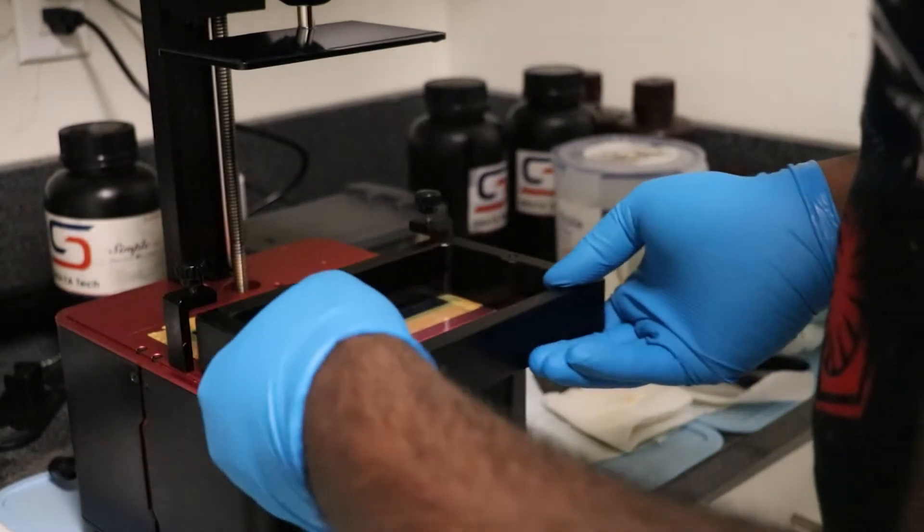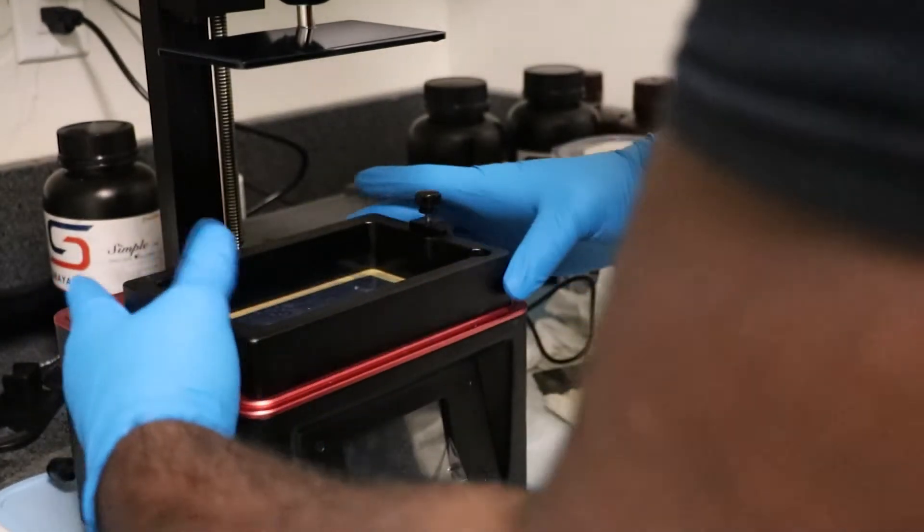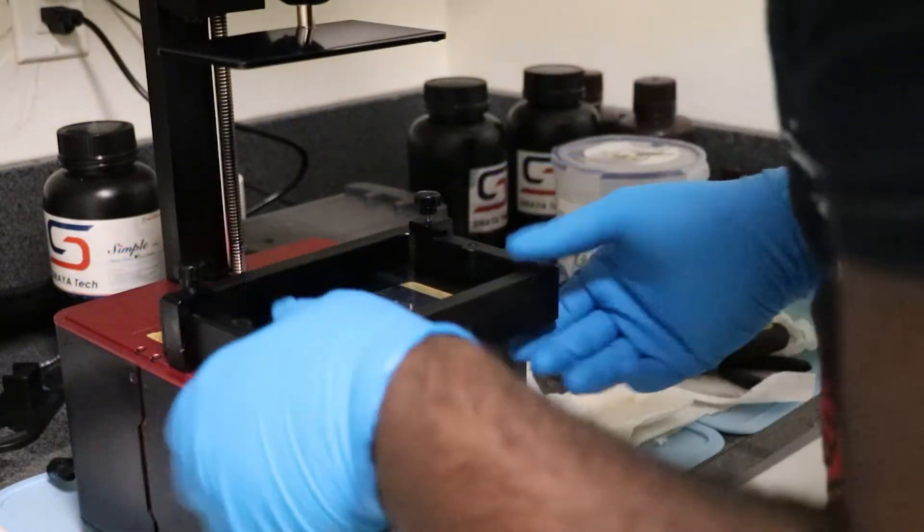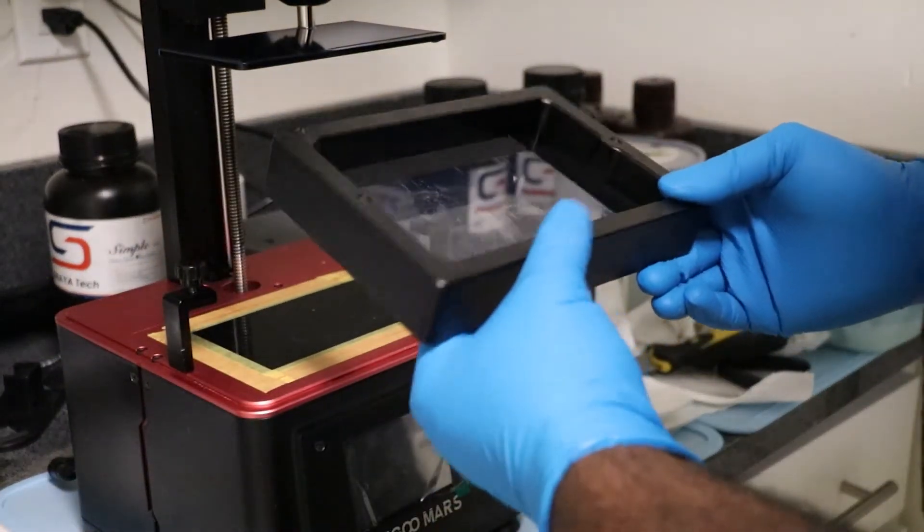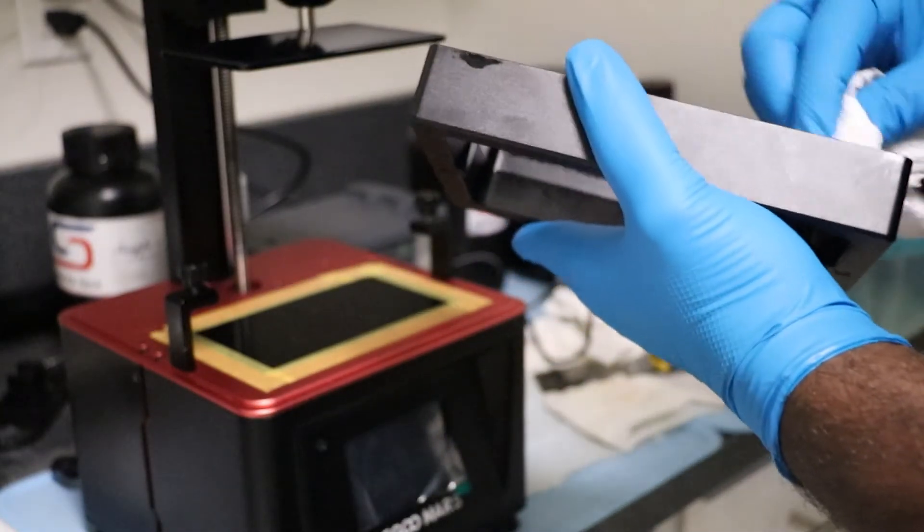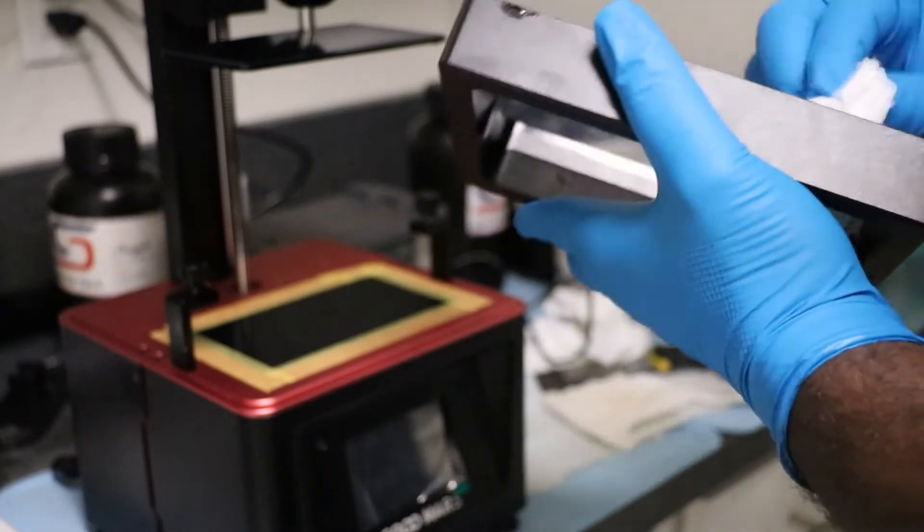I'm going to clean and insert it into the Elegoo Mars printer. I noticed that the vat got a little dirty on the bottom, so I'm going to give it a quick clean before I fill it up.